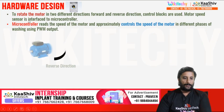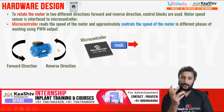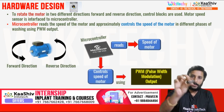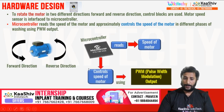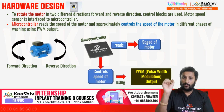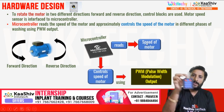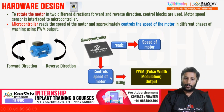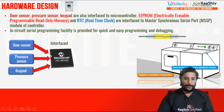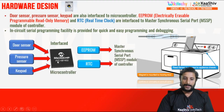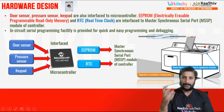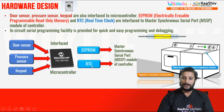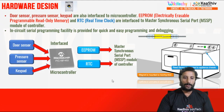To rotate the motor, from the forward direction and reverse direction, coding is in the microcontroller. It will read the speed of the motor. If you feed the keypad, you can read and control. Pulse width modulation is used. Normally it's interlaced. Microcontroller: door sensor, pressure sensor, keypad — interlaced. EEPROM, RTC, Master Synchronous Serial Port Module. It's normal hardware design.